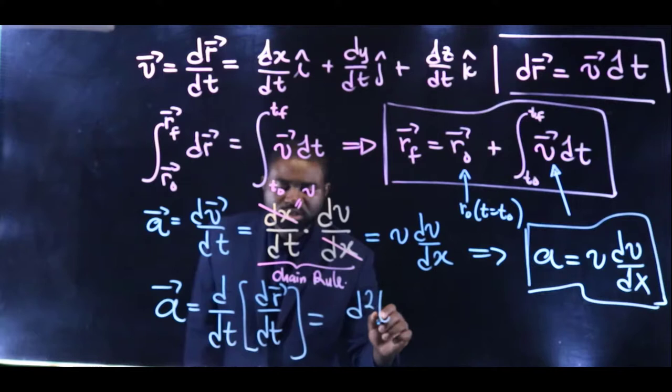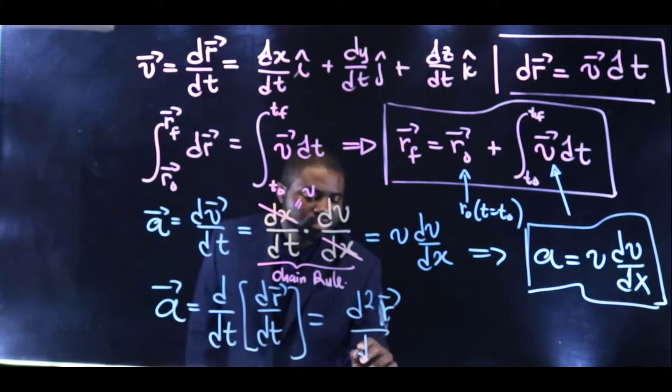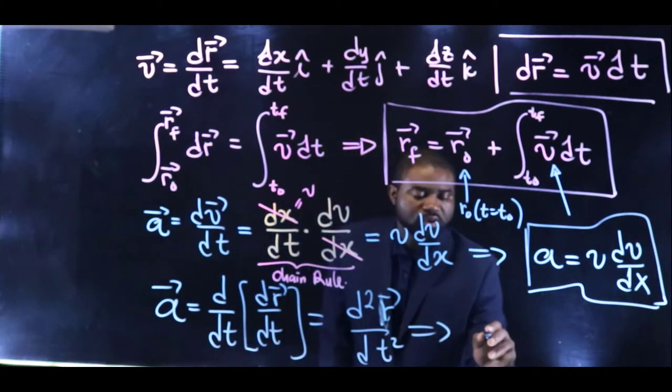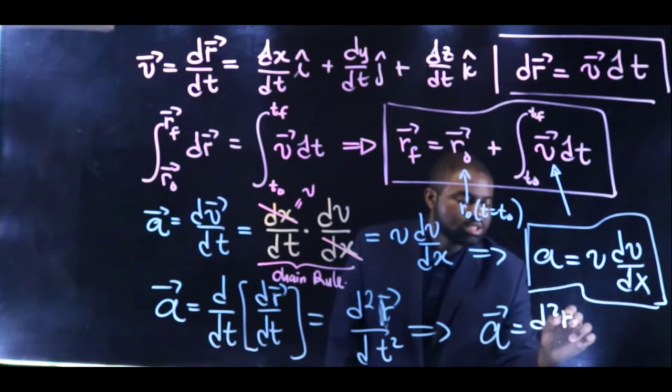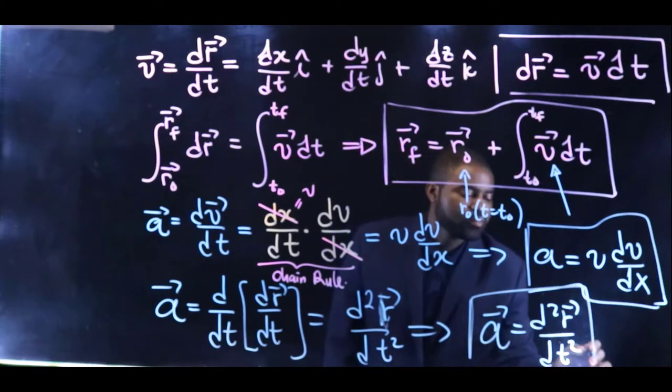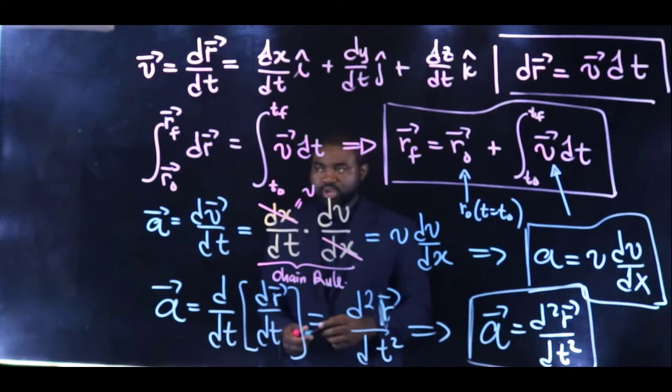dv over dt is dr over dt squared. This means that a is equal to d squared r over dt squared. This is another general expression for a.